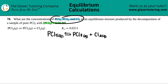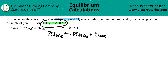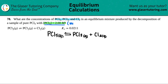We want to know the concentrations of PCl5, PCl3, and Cl2. They said we were decomposing a pure sample of PCl5, meaning that's the only thing present. The PCl5 concentration was 2.00 molarity. We need to read between the lines — is this an initial value or an equilibrium value? It's an initial value.